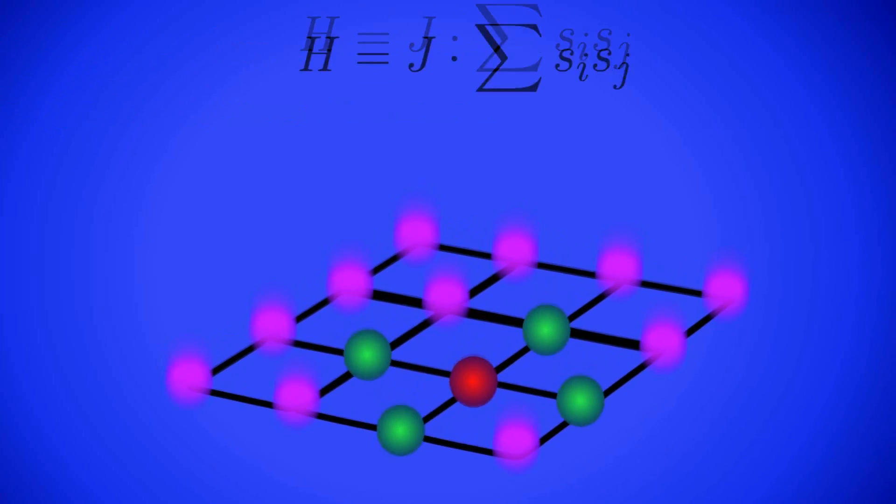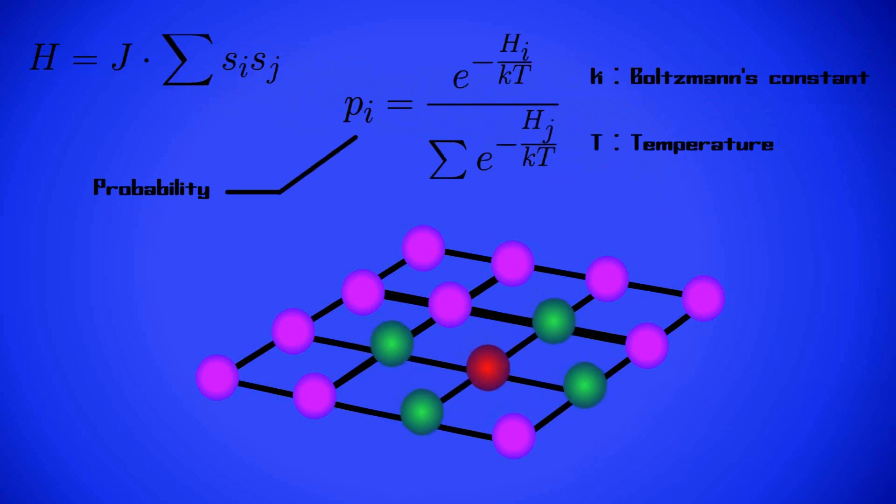But, why does it change? We physicists use the concept of Hamiltonian, to study the energy and behavior of a system. Our system's Hamiltonian depends on the spins and the strength of their interaction. We can define, too, the probability of having one spin configuration or other, depending on the system's temperature. Here is the formula.